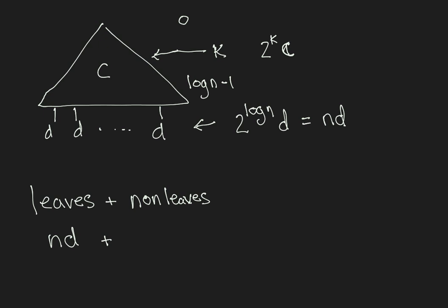Well, we simply sum over all levels k the value at level k. So, our sum goes from level k equals 0 to log of n minus 1, 2 to the k times c.